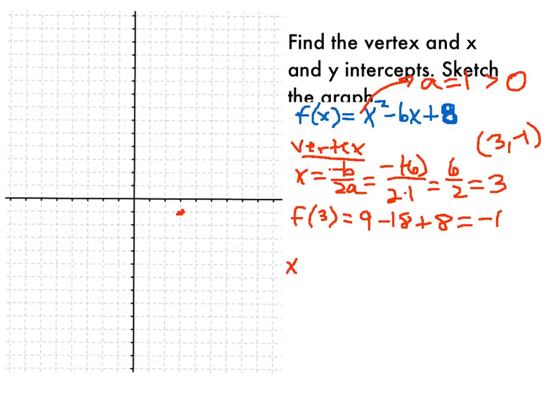Okay, so to find the x-intercepts, remember the x-intercepts are when our function is 0, when our output is 0. So what we're doing there is we're solving x-squared minus 6x plus 8 equal to 0. We now have lots of different ways to solve this. This is exactly why we need to be able to solve any quadratic equation.